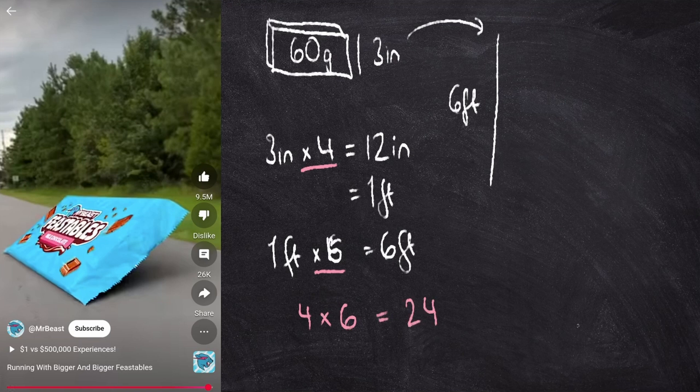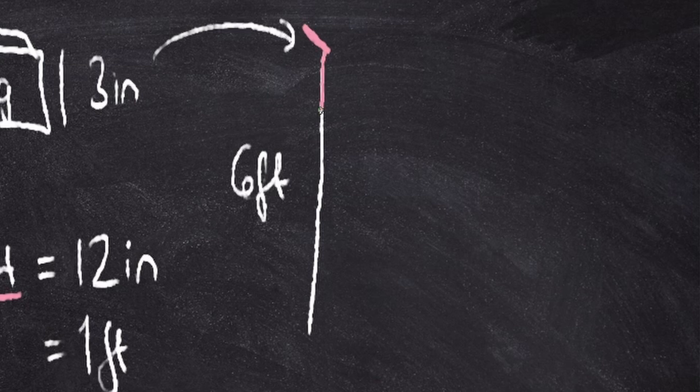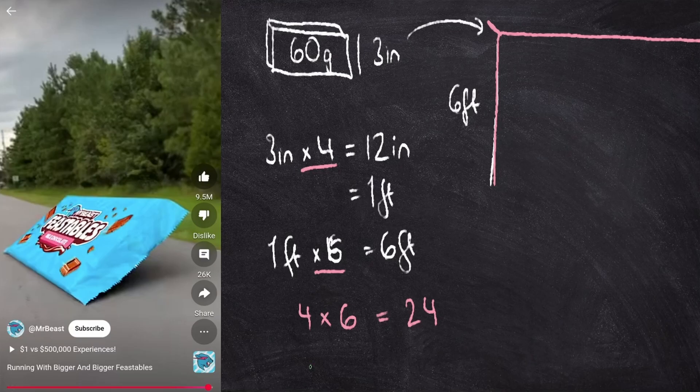But not only are we multiplying the width by 24, we're also multiplying the depth of this massive chocolate bar by 24 and the length. So we're multiplying by 24 times 24 times 24, which is 13,824.